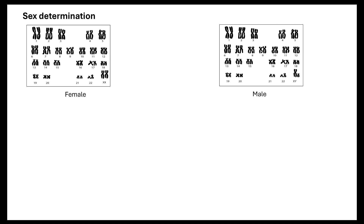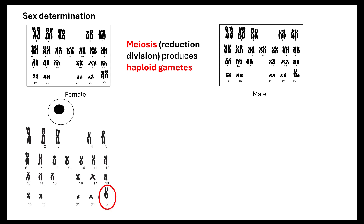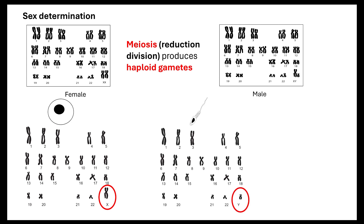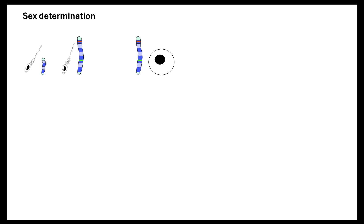Your sex is determined by the gametes that you inherited. Meiosis is a reduction division that produces haploid gametes. Those haploid gametes, if you're female, carry the X chromosome. If you are male, the meiotic division produces gametes that could either carry the Y chromosome or the X chromosome. It is the fusion of these gametes during sexual reproduction that determines the sex.